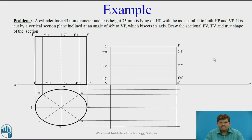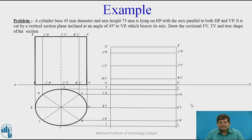Now for further completion of the top view: project the points from the front view and similarly project the points from the first top view. You will get a rectangle in the top view as well. Here this is the axis, so in both views the axis is a line view.